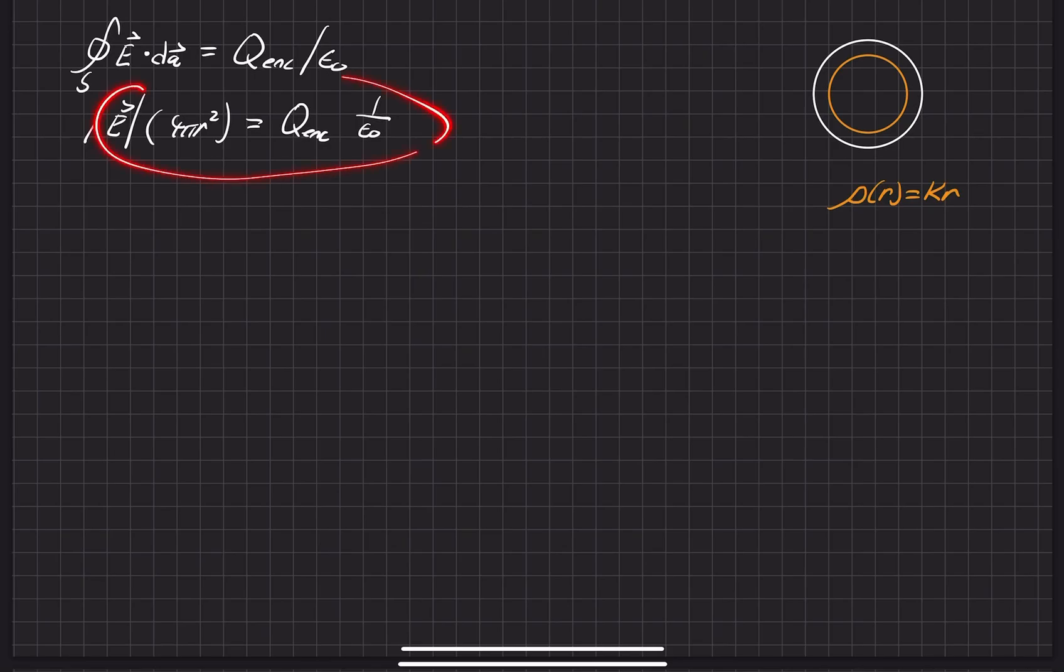So since we already have this in a nice algebraic form, let's go ahead and solve for our goal here, which is the electric field. We'll keep it in the magnitude form for now. And we'll go ahead and use 4 pi epsilon naught, since that is a common factor that we go through these problems. We do have a 1 over r squared as well, and we also have our q enclosed.